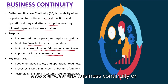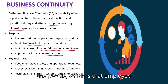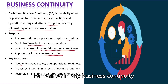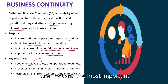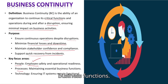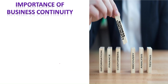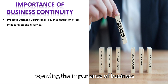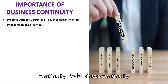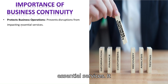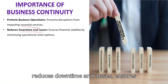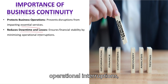The key focus areas of Business Continuity are people — meaning employee safety and operational readiness. Remember, in any Business Continuity, Disaster Recovery, or Incident Response plan, human safety is the foremost and most important point to consider. Processes include maintaining essential business functions and ensuring IT systems remain functional. Business Continuity also protects business operations and prevents disruptions from impacting essential services, reducing downtime and losses.